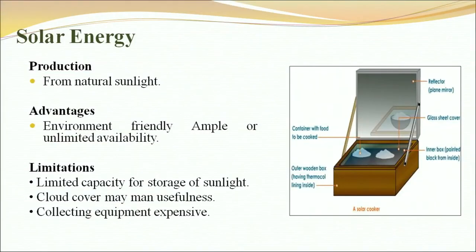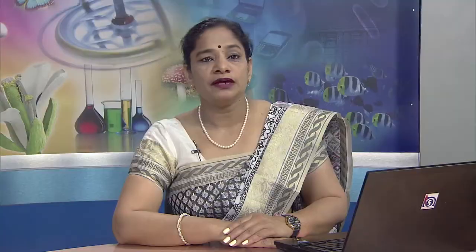Solar energy is produced from natural sunlight. Its advantages are that it is environment friendly and has ample, unlimited availability. Limitations include limited capacity for storage of sunlight, reduced usefulness due to cloud cover, and expensive collecting equipment. Wind energy is produced by fans directing wind, used from long ago for irrigation of crops. Its advantages are no pollution and being freely available, but limitations include it not being suitable everywhere or only intermittently available, and windmill fans being visible hazards for flying birds and aeroplanes.